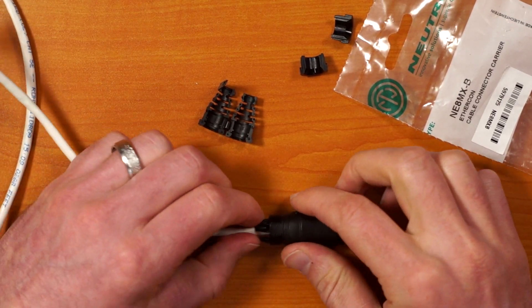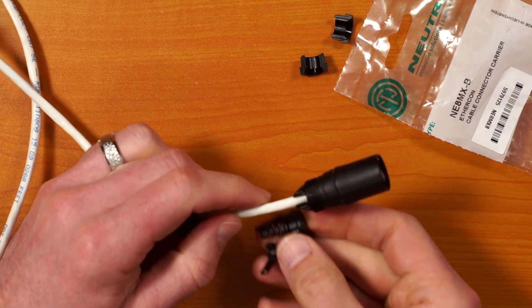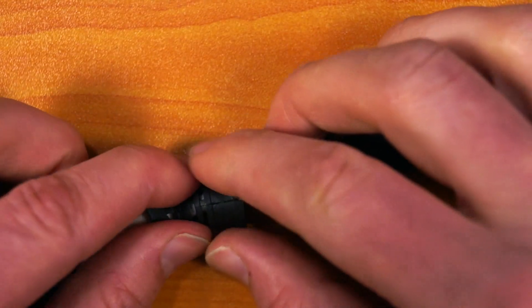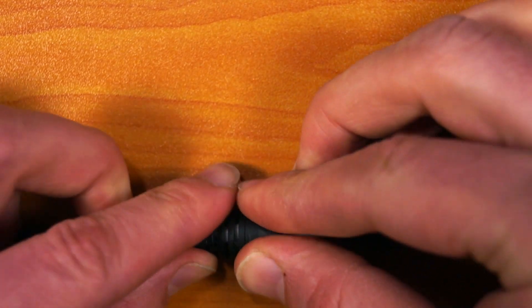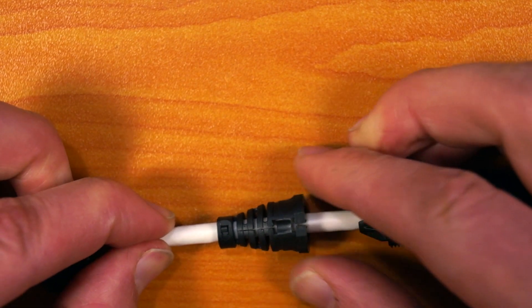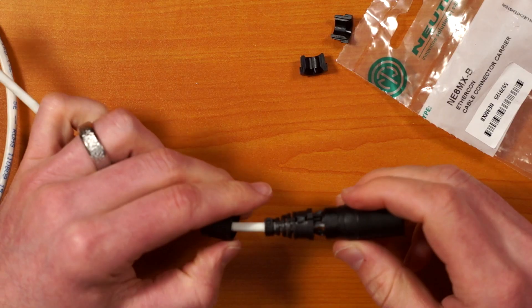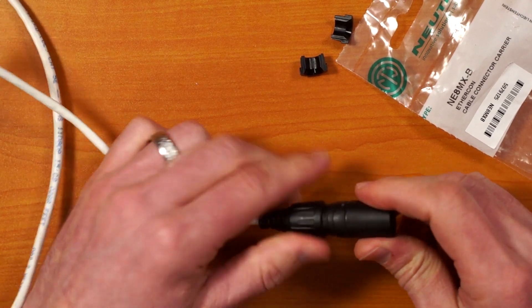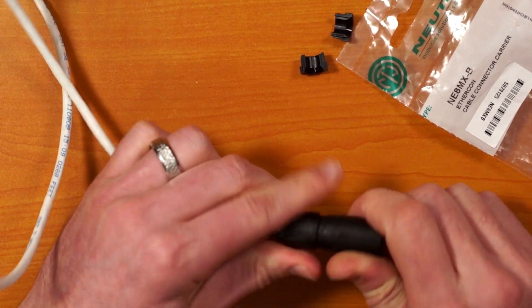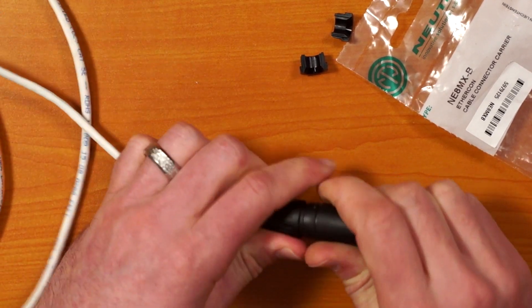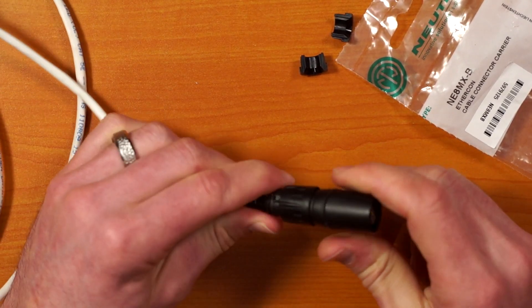So then now all you've got to do is put together your boot assembly. So that's just fairly simple. You just clamp that together. And then there's this little, it just clicks in and then just put it all together. Slide the bushing forward, tighten that down. There you have it.